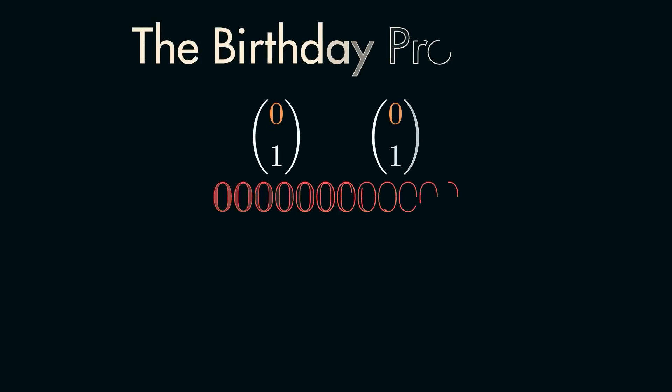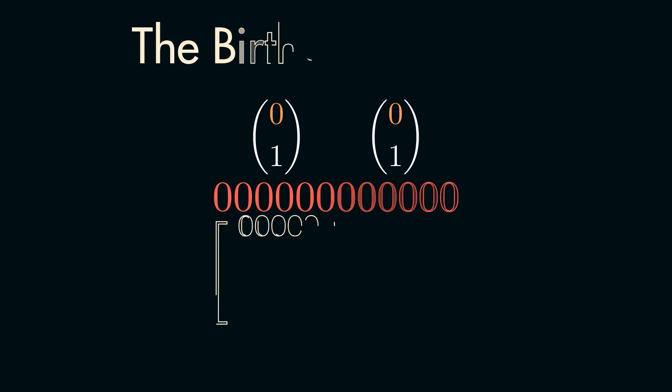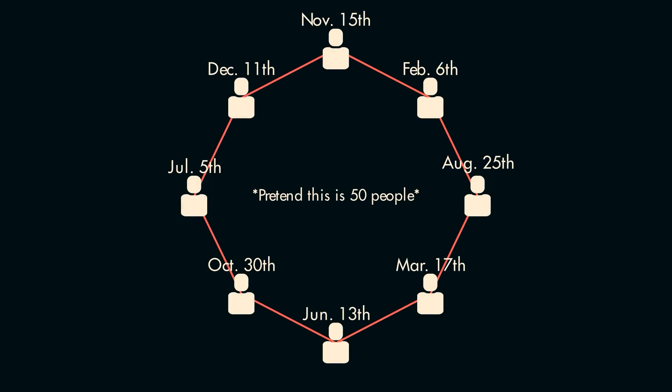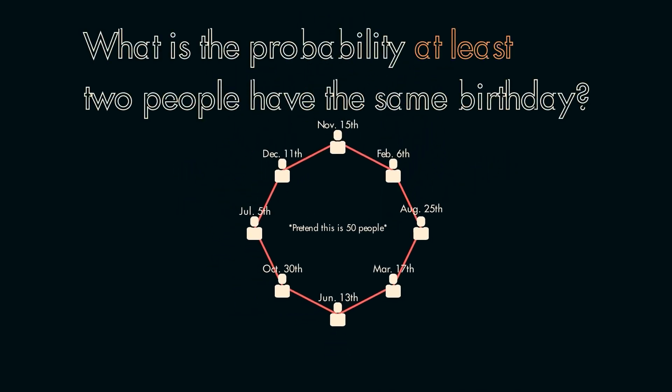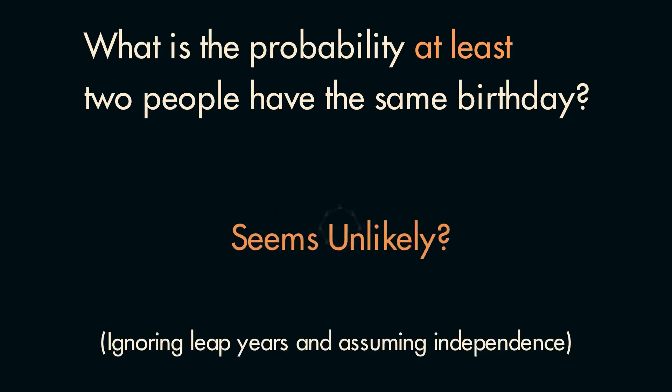Now let's apply this framework to one last, more interesting problem — the birthday problem. Imagine you're in a group of 50 people and you all go around saying what your birthday is. What is the probability at least two people have the same birthday? That seems pretty unlikely, doesn't it? Maybe you're thinking 50 out of 365. Well, let's apply the framework and figure out just how likely it is. I encourage you to try and work through this problem without help and then come back to the video when you get stuck.